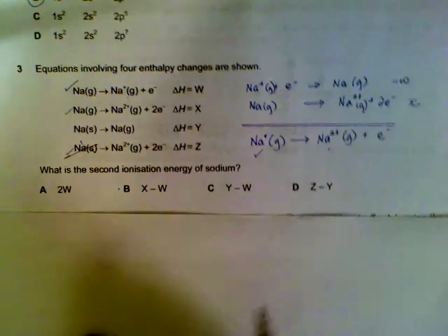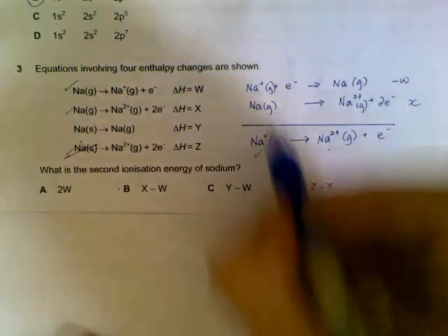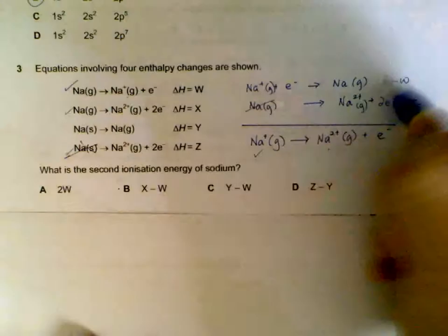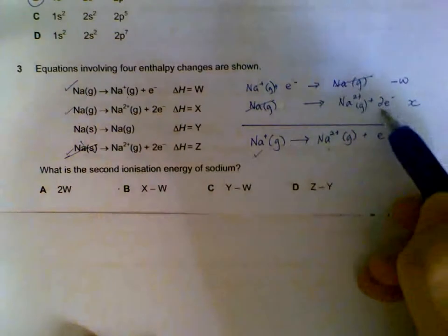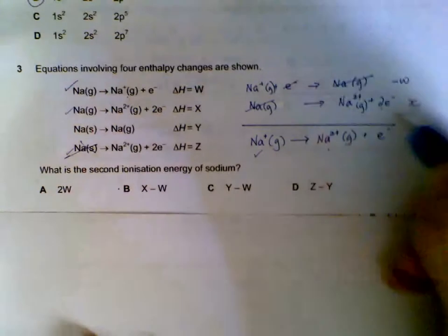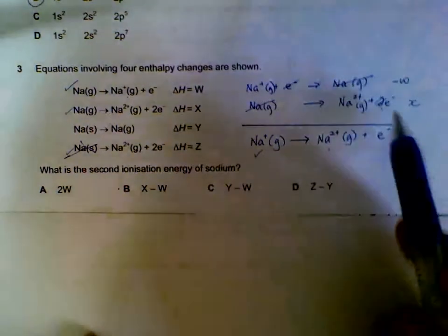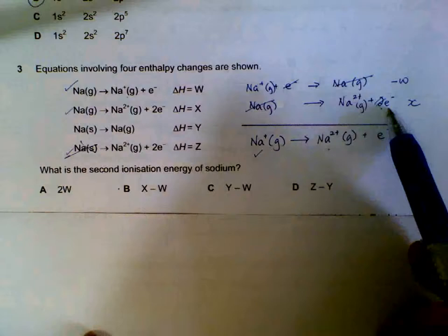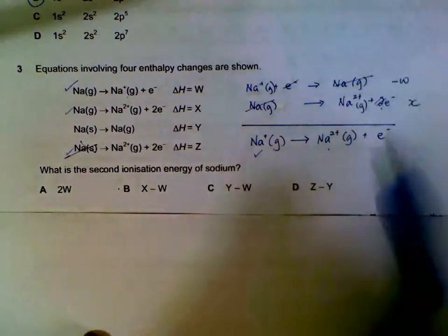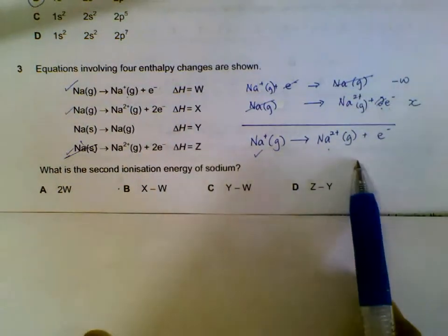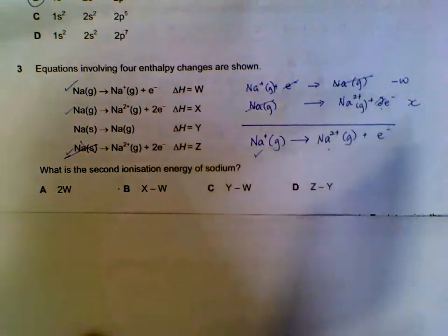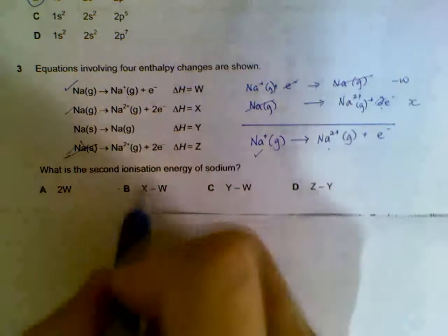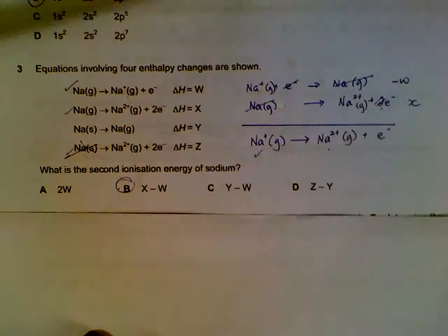Once we have these two equations, we realize that we can combine them. The Na gas cancels out on either side. Two electrons and one electron give us one electron on the right side. If we merge them down, we have this overall equation. So minus W plus X is the second ionization energy of sodium.